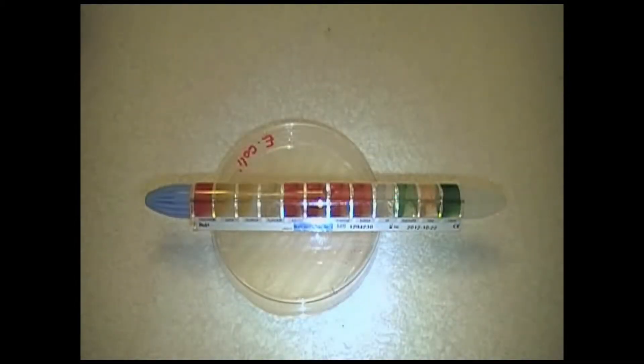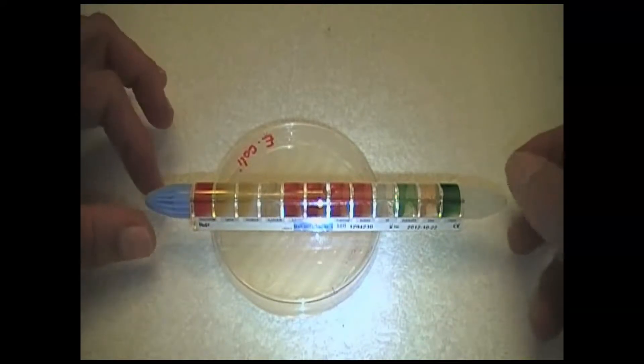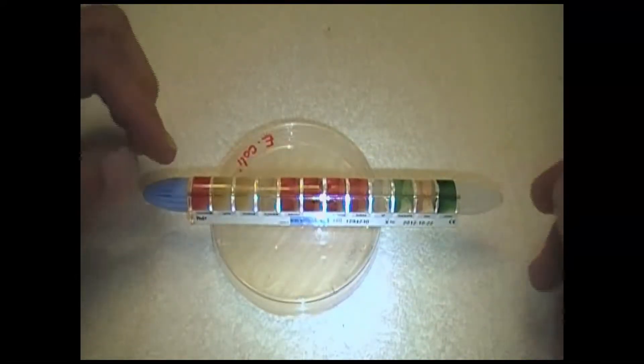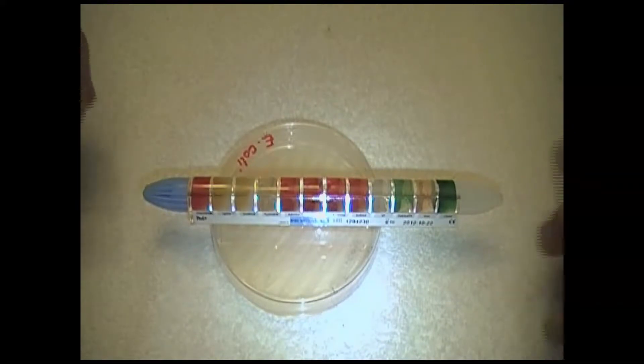We are going to look at the process of inoculating an entero tube. We have two things in front of us: the entero tube, which is 12 compartments that have various biological tests in them.